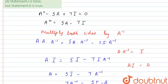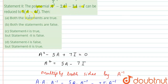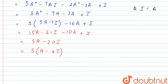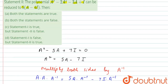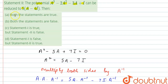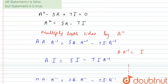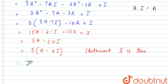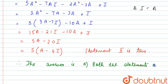Taking 5 as common, we get 5 times (A minus 4I). Statement 2 said that the polynomial reduces to 5 times (A minus 4I), and we have obtained the same answer. Thus statement 2 is also true. The correct option is A: both statements are true. Therefore the answer is option A. Thank you.